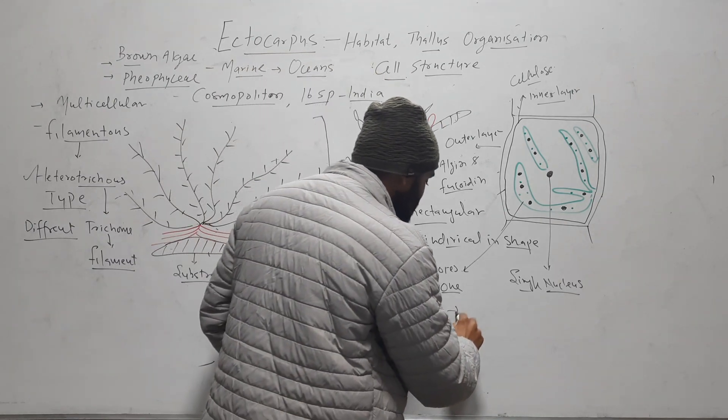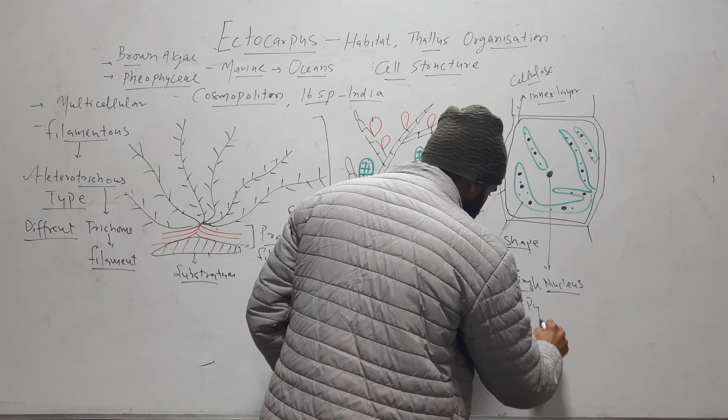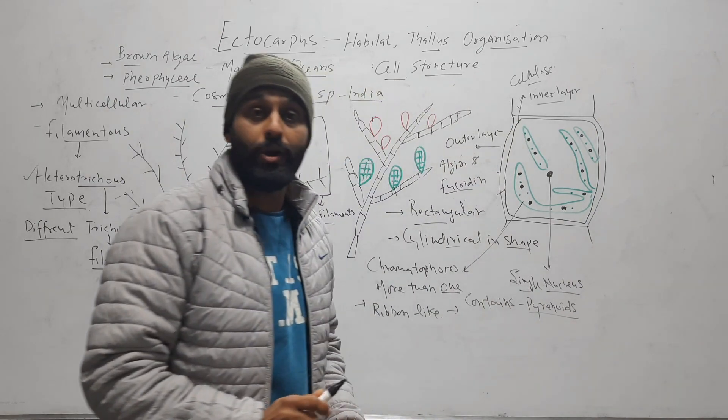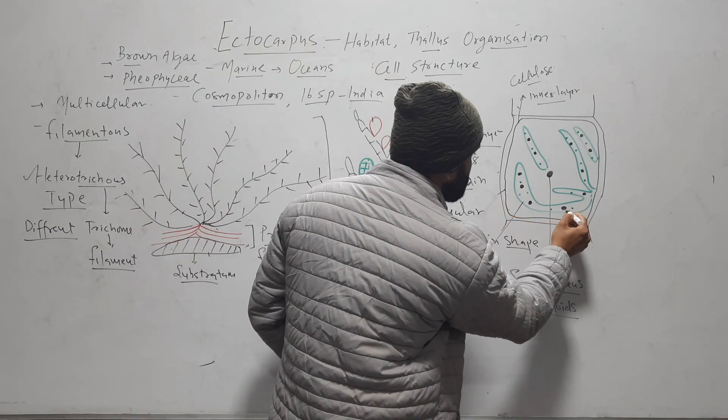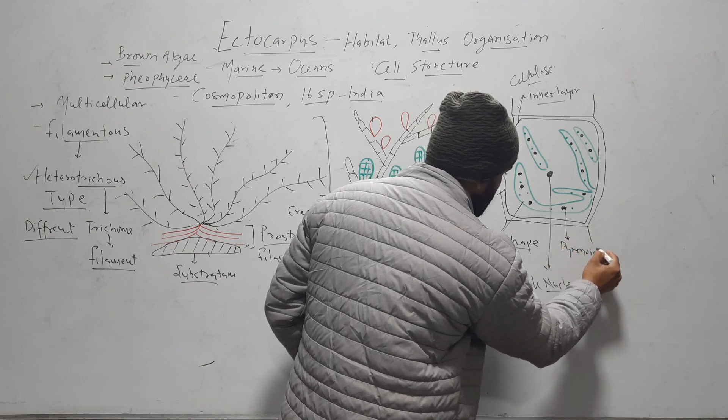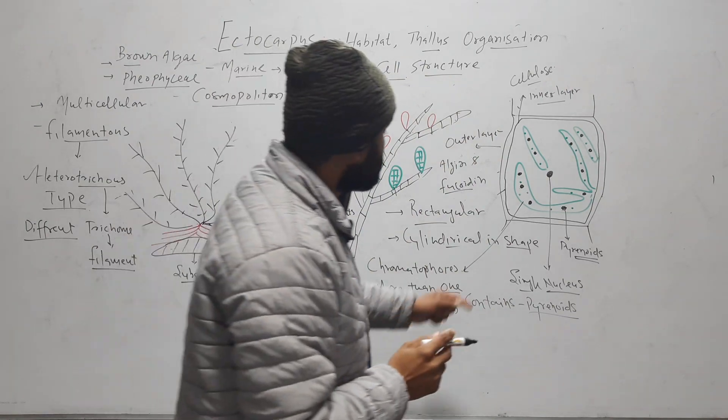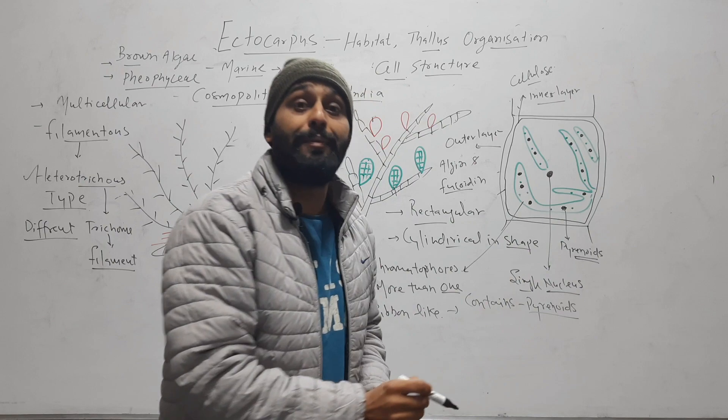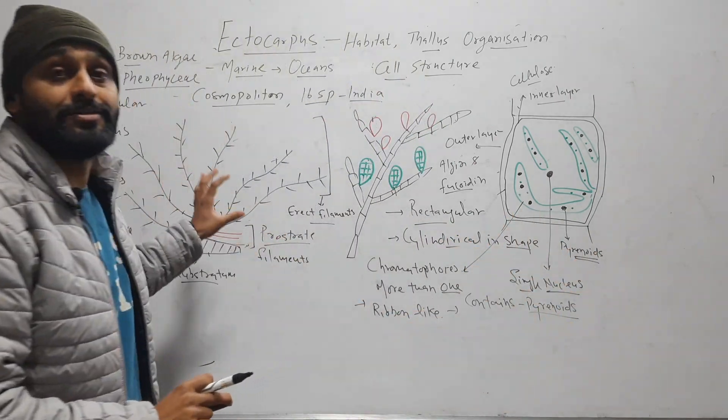And they contain pyrenoid starch storing bodies in them. These bodies are pyrenoid. And they also have fucoxanthin pigment that gives characteristic brown color to this thallus.